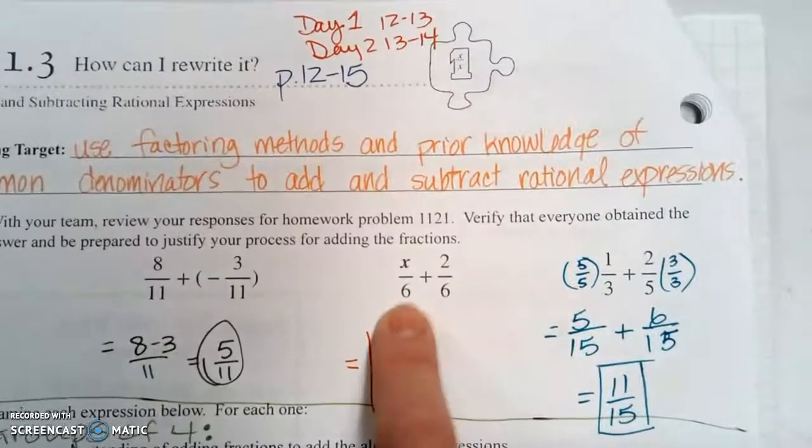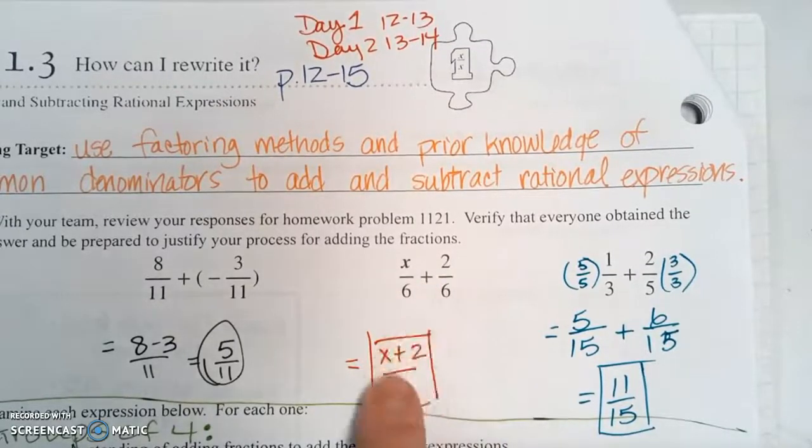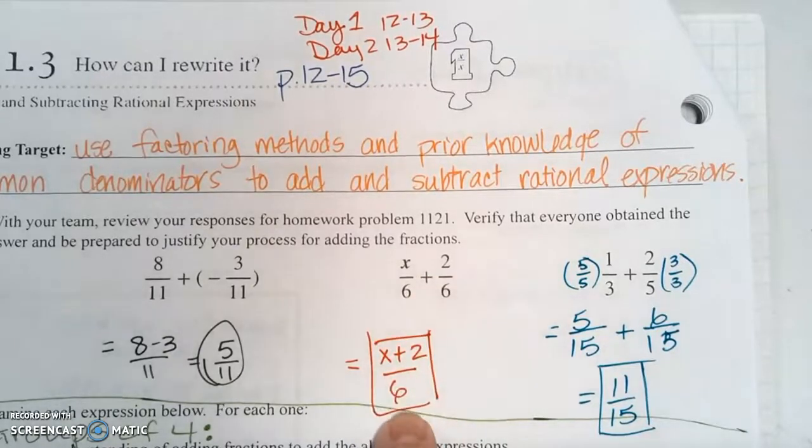The second one here has common denominators again, so we can add the two numerators x plus 2, put it over the common denominator of 6.